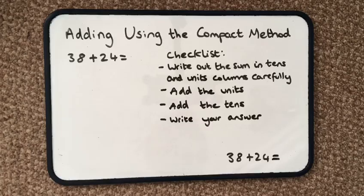We're looking at adding using the compact method. This is usually a method you use after you've trialled adding using counters, then using a number line and then using the partitioning method. You can find all these other videos on our website.